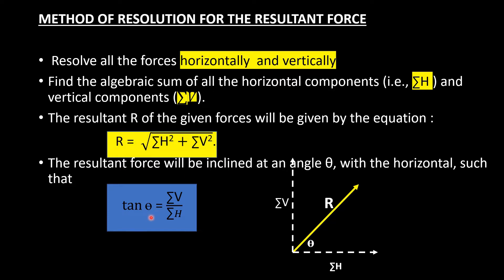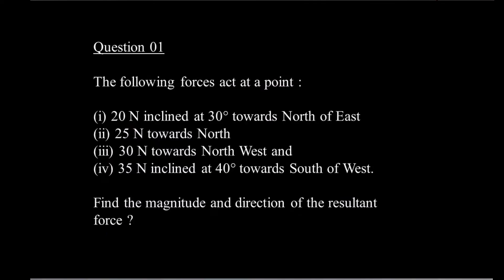Now let's go to the first problem. We have a question: the following forces are acted at a point. 20 N inclined at 30 degrees towards north of east; 25 N towards north; 30 N towards northwest; and 35 N inclined at 40 degrees towards south of west. Find the magnitude and direction of the resultant force.